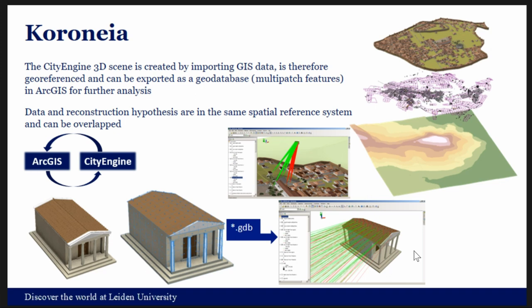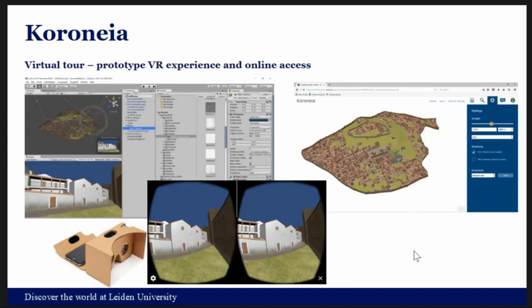Talking about export possibilities: I also worked with Unity 3D — you can export the entire scene as FBX. There is also an online web viewer where I put two different hypotheses of the urban layout, and you can play around with sunlight and how it would impact the urban environment.